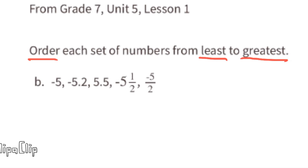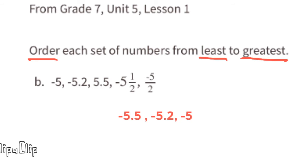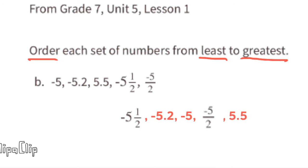For group B, the negative number with the largest absolute value is negative 5 and a half, also written as negative 5.5. Next is negative 5.2, then negative 5. The fraction negative 5 halves is equivalent to negative 2.5. The only positive number is 5.5. So group B from least to greatest: negative 5.5, negative 5.2, negative 5, negative 2.5, 5.5.